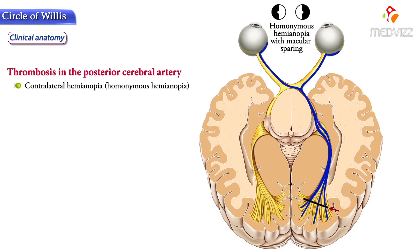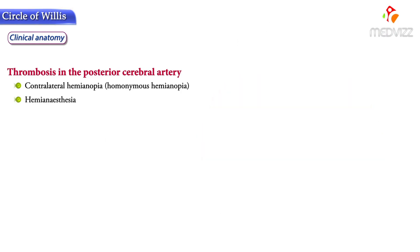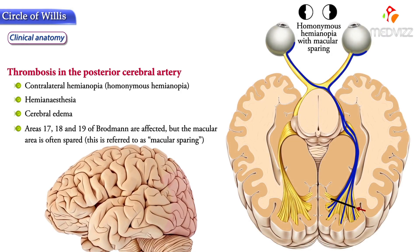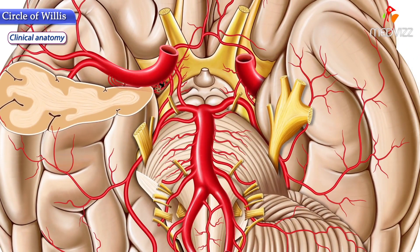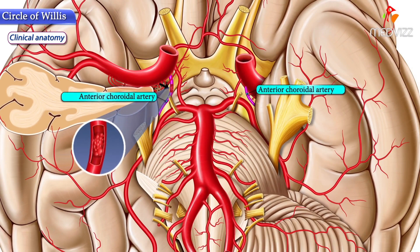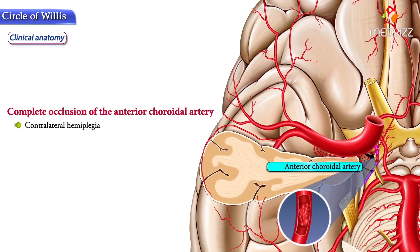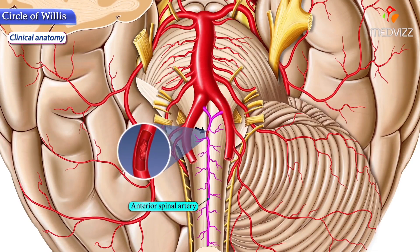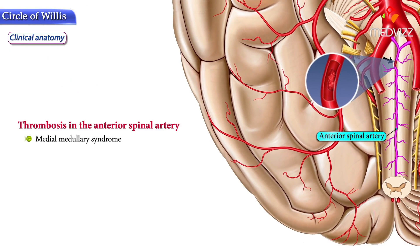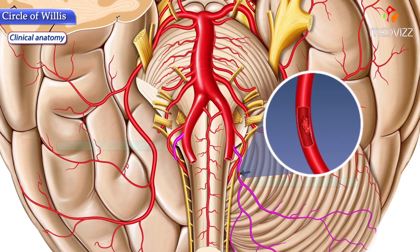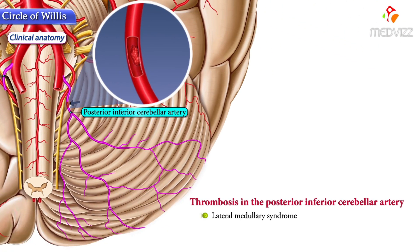Thrombosis in the posterior cerebral artery leads mainly to visual effects, causing contralateral homonymous hemianopia, hemianesthesia, and cerebral edema. Areas 17, 18, and 19 of Brodmann are affected, but the macular area is often spared — this is referred to as macular sparing. Complete occlusion of the anterior choroidal artery may lead to contralateral hemiplegia, hemianesthesia, and hemianopia. Thrombosis of the anterior spinal artery leads to medial medullary syndrome, while thrombosis of the posterior inferior cerebellar artery leads to lateral medullary syndrome.